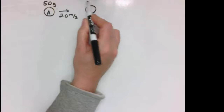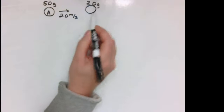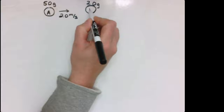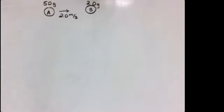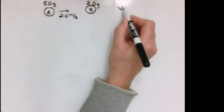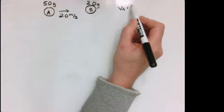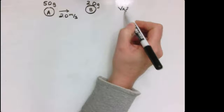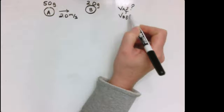It strikes a 20 gram marble — we'll call this marble B — and that marble is just at rest, so its velocity is zero. What we're looking for is the velocity of marble A and marble B after the collision.